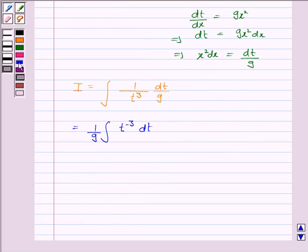And the integral of this is 1 by 9 into t to the power minus 3 plus 1 upon minus 3 plus 1 plus c, where c is the constant of integration. So this is equal to 1 by 9 into t to the power minus 2 upon minus 2 plus c.